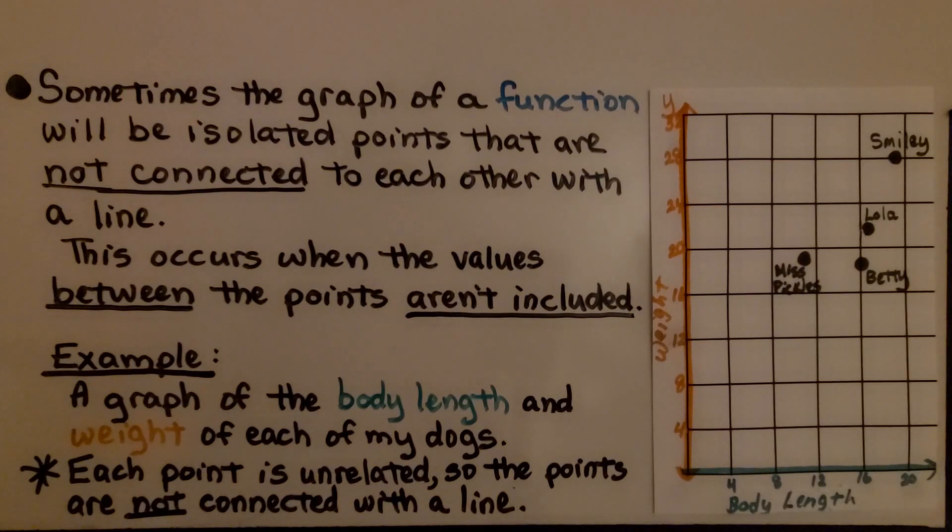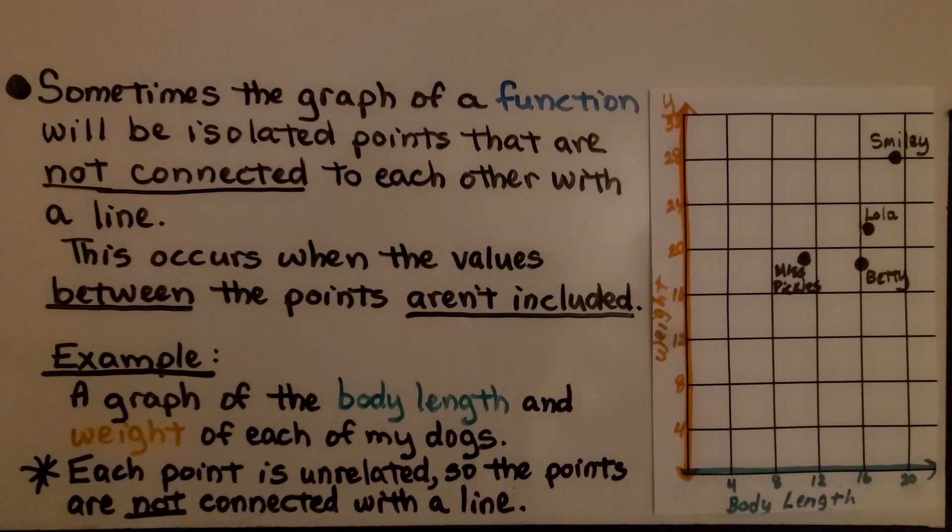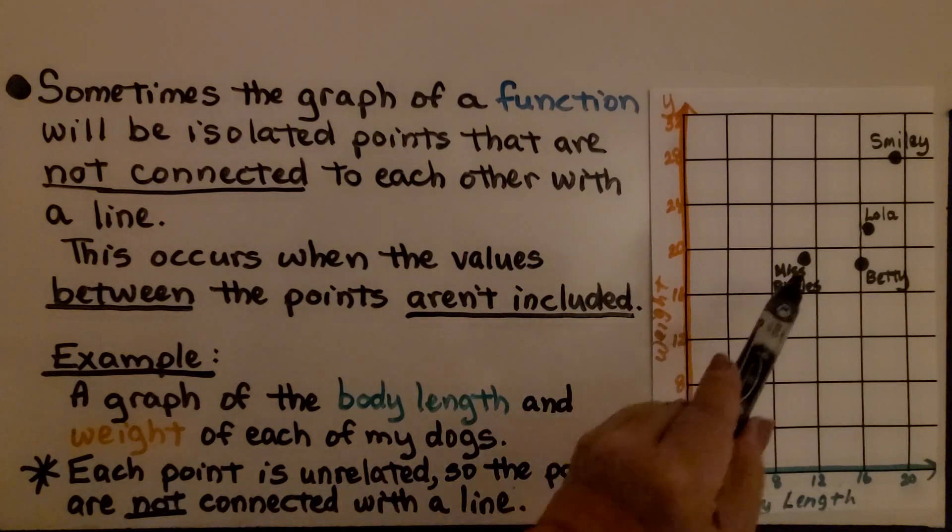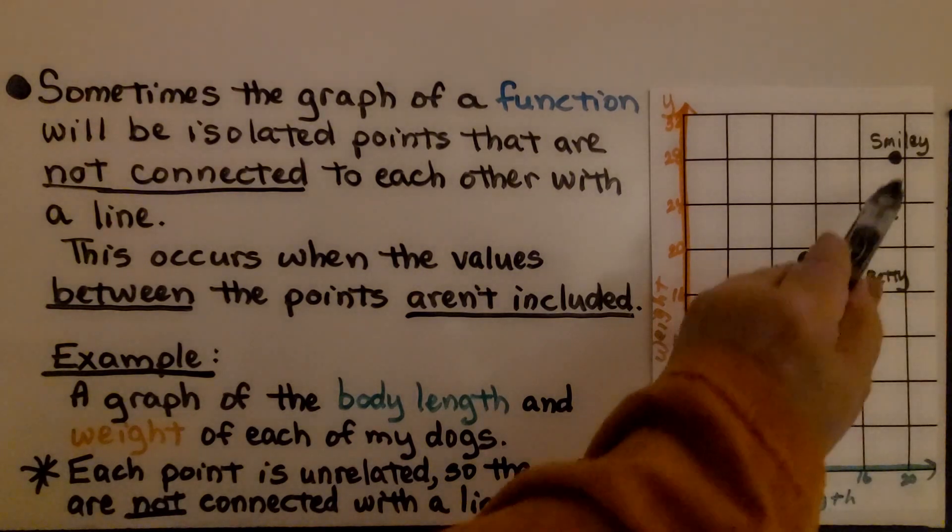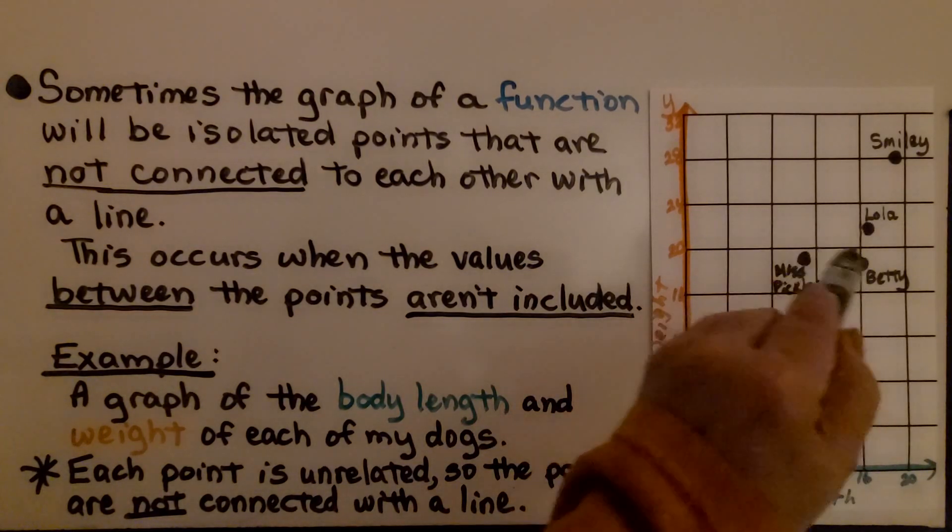For example, this is a graph of the body length and the weight of each of my dogs. I have four dogs. I have Miss Pickles, Betty, Lola, and now I have Smiley. He's my newest dog. Each point is unrelated. They're not connected. So the points aren't connected with a line.